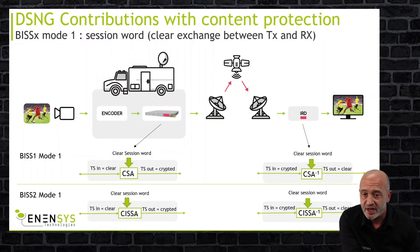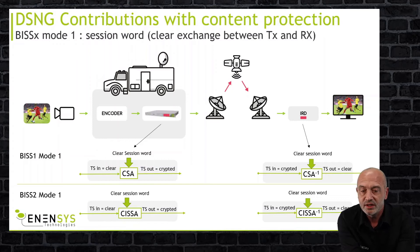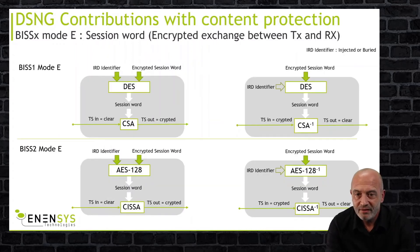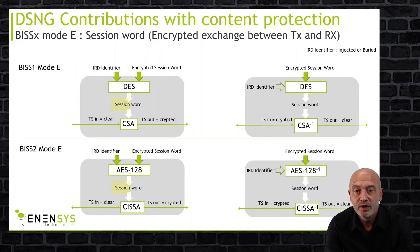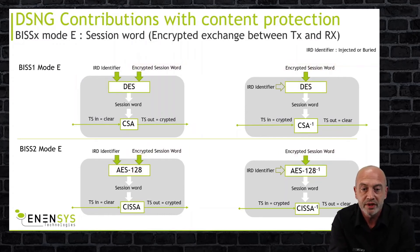The same functional block diagram applies in version 2 Mode 1, except that the CSA block is updated and uses a 64-byte key in version 2, while version 1 uses a shorter key. People on the field have accessed the key since it is exchanged in Mode 1 as a clear data. Using Mode E, there are two stages inside the BIS block. The key — called the session word — used to control the CSA scrambling process, is encrypted before being exchanged between transmitter and receiver. So this encrypted key must be decrypted inside the device before controlling the scrambling block.